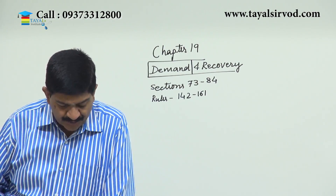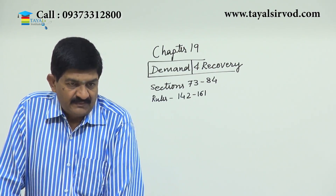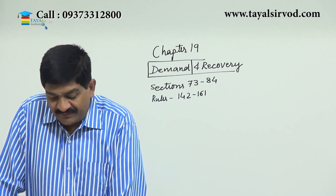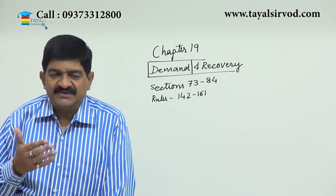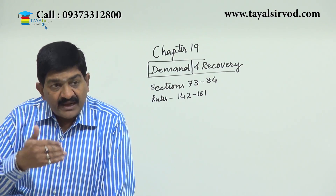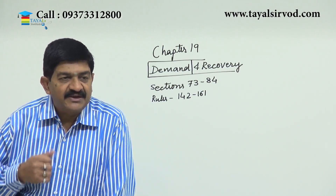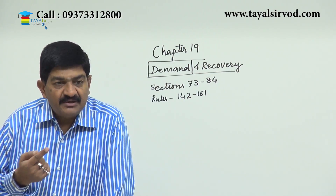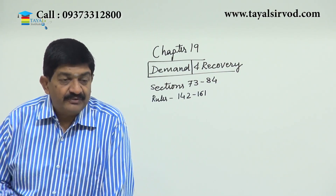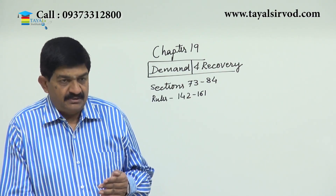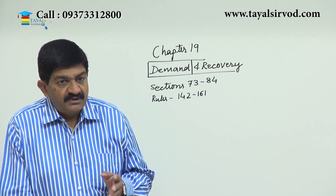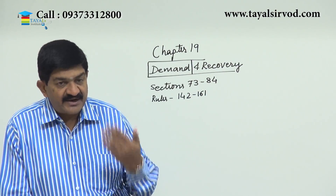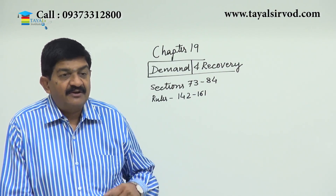The next is input tax credit wrongly availed or utilized. Input tax credit provisions are already known to us — what goods or services qualify for credit. The answer is capital goods, inputs, and input services, but only those utilized in the course or furtherance of business. Where any procurement of goods or services is not utilized for or in relation to business and still the credit has been claimed, that is credit wrongly availed.